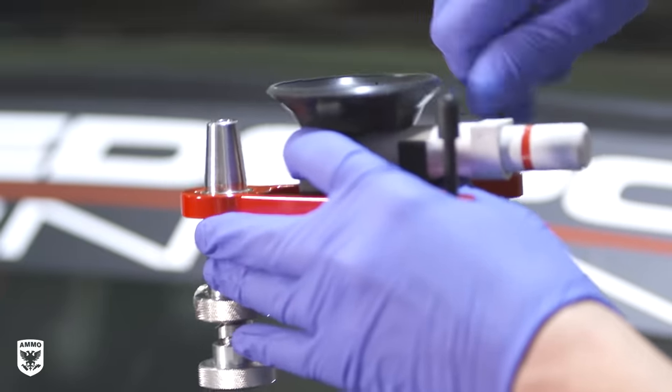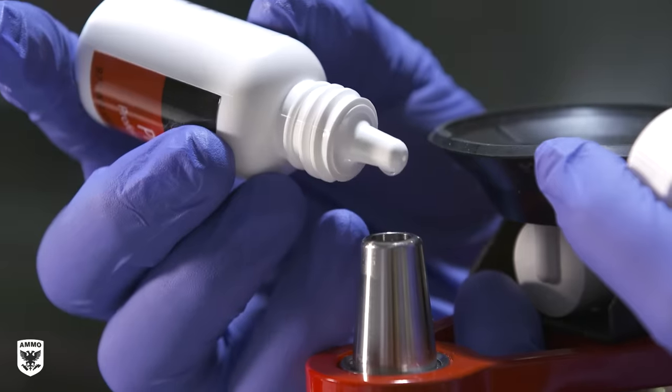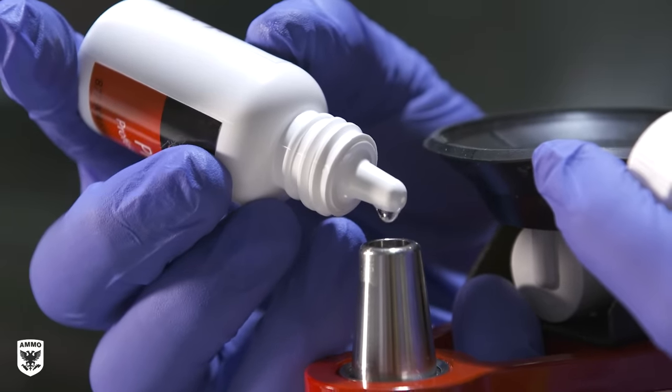After screwing the injector to the bridge and raising the stabilizing legs, Josh loads the resin into the injector using five to seven drops.